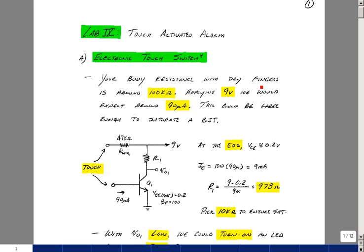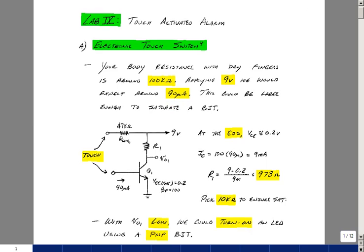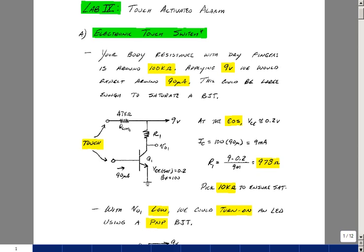The resistance between your fingertips, if your fingers are dry, is around 100,000 ohms. So if we had a 9-volt battery, that would be around 90 microamps of current. We could potentially use this current as a base current to saturate a transistor.